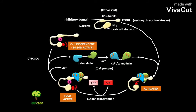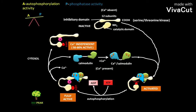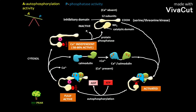The Ca2+-independent enzyme remains active even after Ca2+ calmodulin dissociates from it. But when the activity of protein phosphatase overrides the autophosphorylation activity of CAM kinase 2, CAM kinase 2 undergoes dephosphorylation to form the inactive enzyme with the release of inorganic phosphate. And again, the cycle continues.